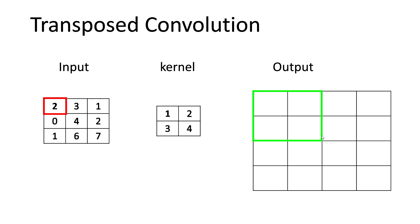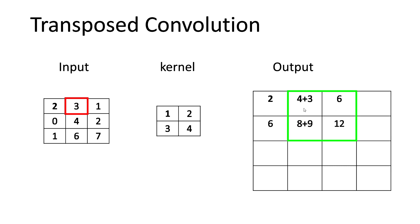You can see the output values 2, 4, 6, 8 placed in the output grid. In the next step, just like in convolution, the input element shifts one position to the right — now we consider '3'. We multiply 3 with all kernel elements and write results into a shifted green output box (shifted by stride=1). So 3×1=3, 3×2=6, 3×3=9, 3×4=12, and these are added into the overlapping output positions.